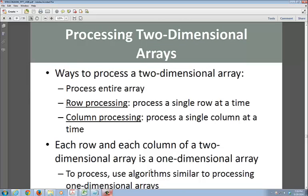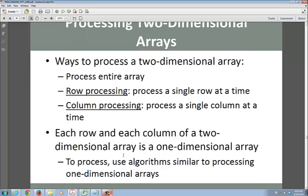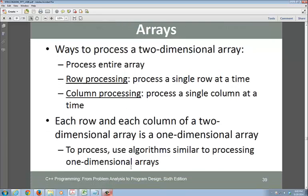So how do you process an array? This is very important. Two ways to process an array: row processing, processing a single row at a time, and column processing, processing a single column at a time. Each row and column of a two-dimensional array is a one-dimensional array. To process, you're using an algorithm similar to processing a one-dimensional array. You're actually reading a row from left to right.